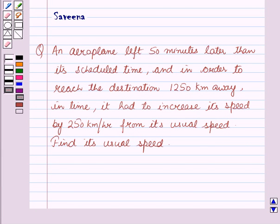Hello and welcome to the session. In this session we will discuss a question which says that an aeroplane left 50 minutes later than its due time, and in order to reach the destination 1250 km away in time, it had to increase its speed by 250 km per hour from its usual speed. Find its usual speed.